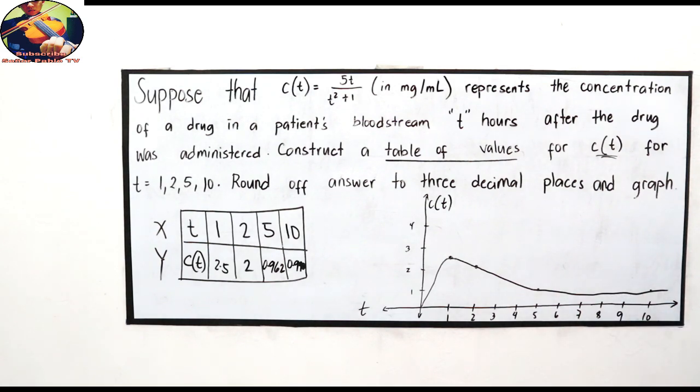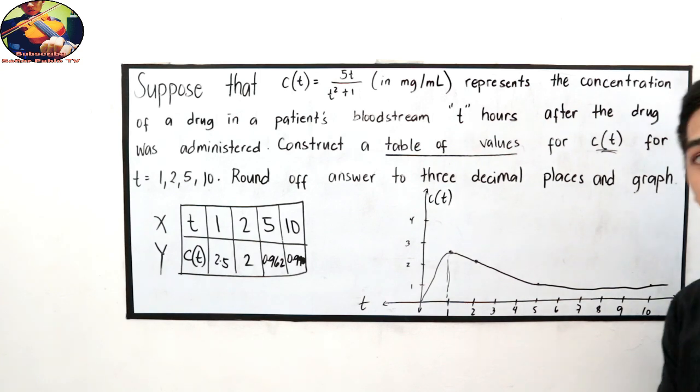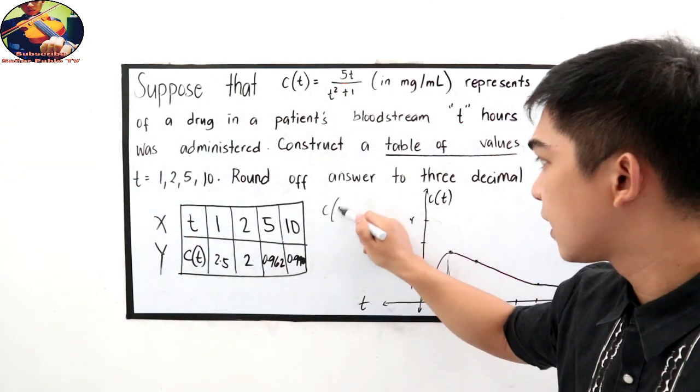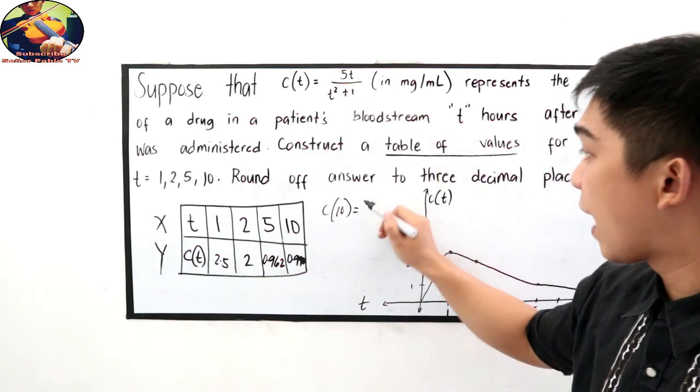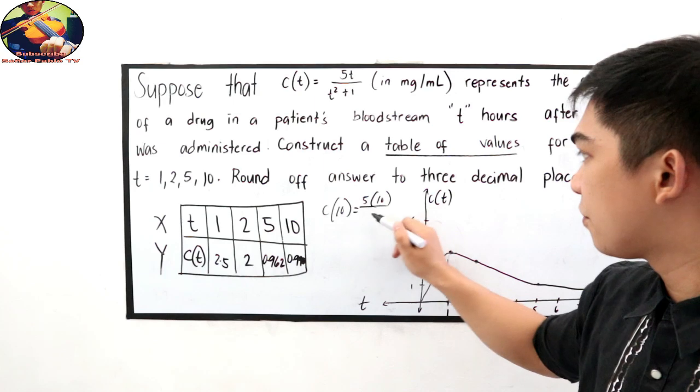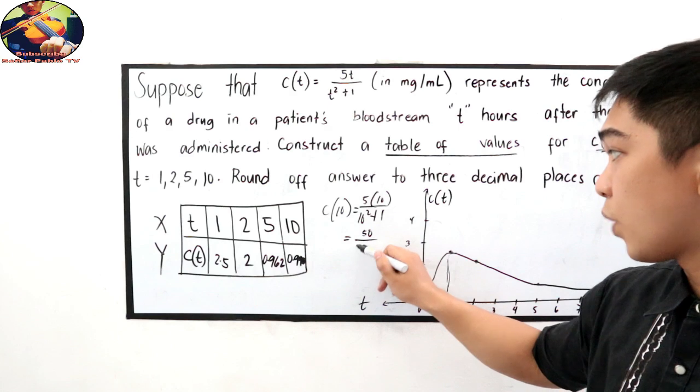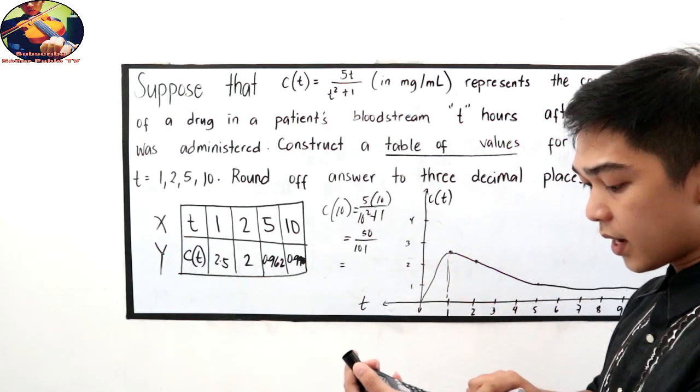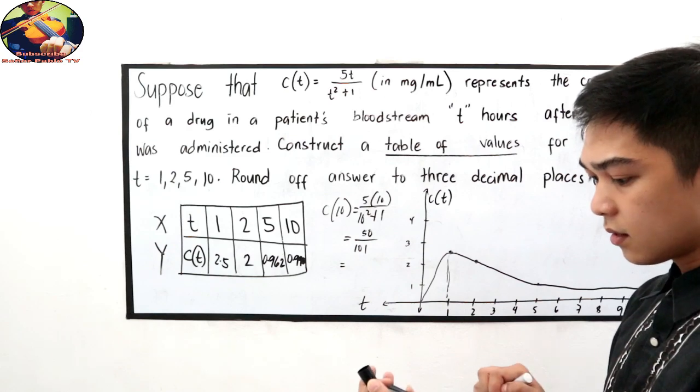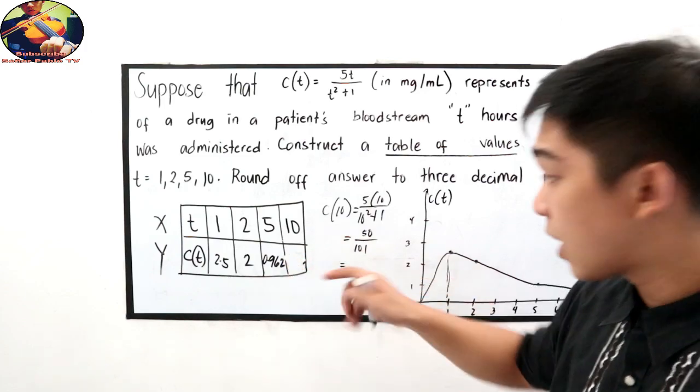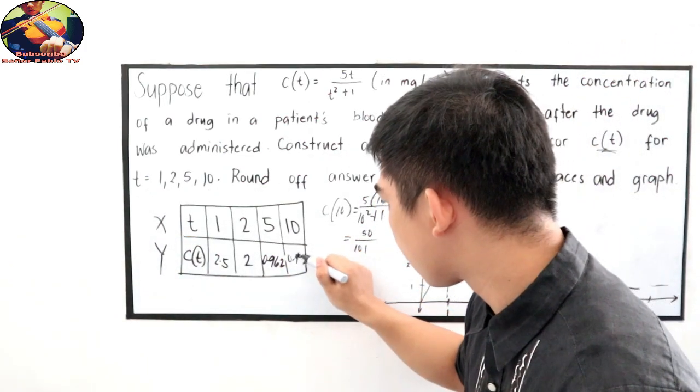Ayan yung magiging graph ng ating rational function dito sa given na ito. Parang doubtful ako dito sa value natin dito. Dapat pababa siya ng pababa pa dito. I-check natin yung sa ten. Sa c of ten, that is 5 times 10 over 10 squared plus 1. 50 over 101. Dapat 50 over 101. 50 divided by 101, ito dapat ay 0.496. Pwede nyo i-check sa calculator, 0.496.